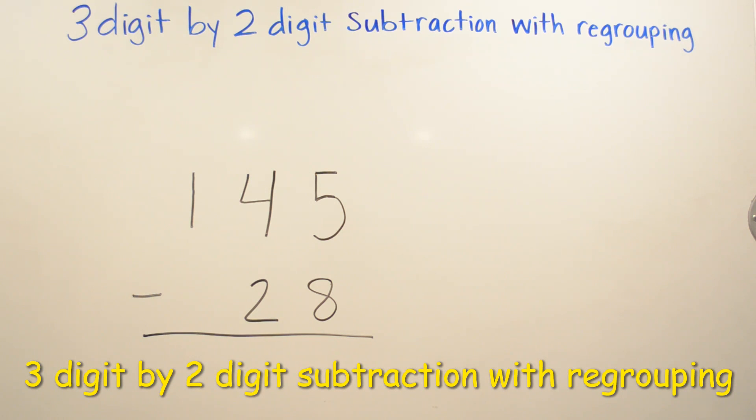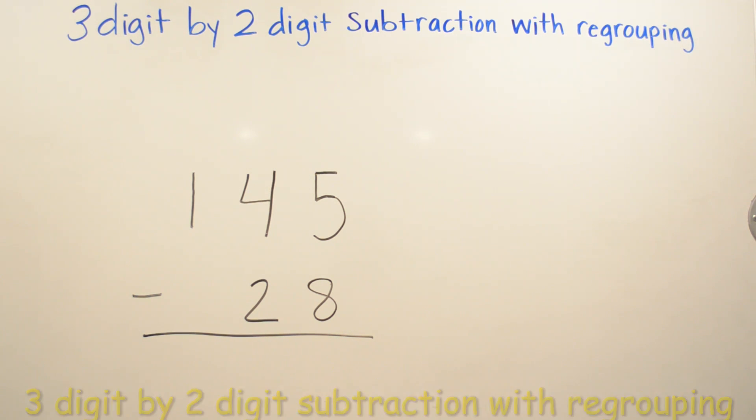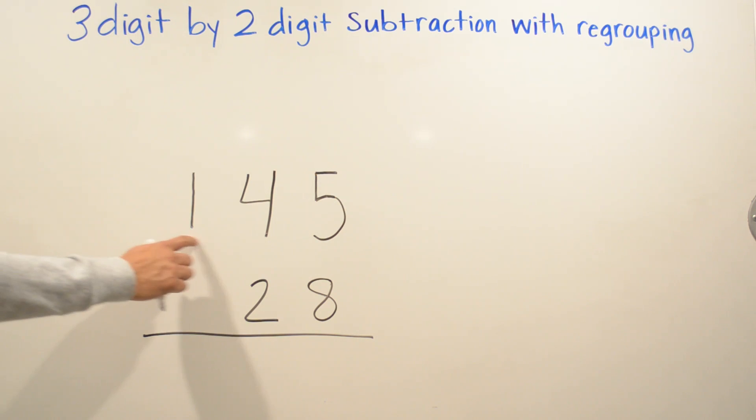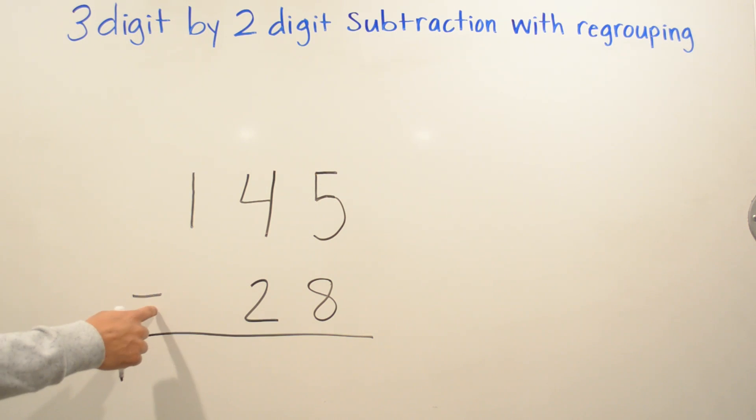Today we are going to be doing three-digit by two-digit subtraction with regrouping. We are doing 145 minus 28.